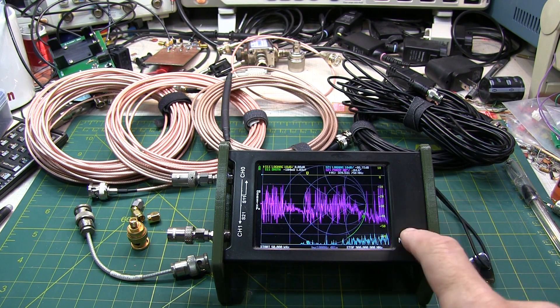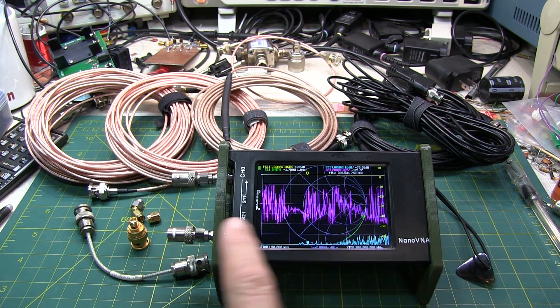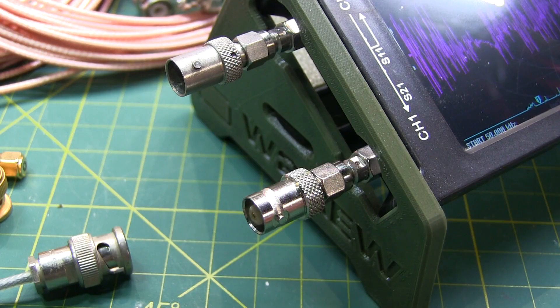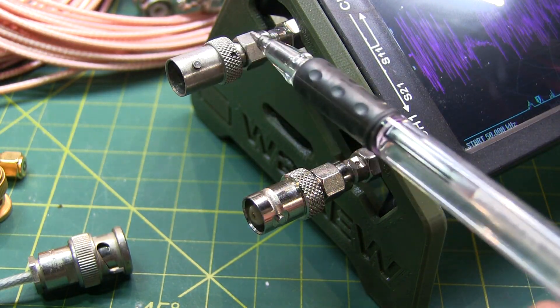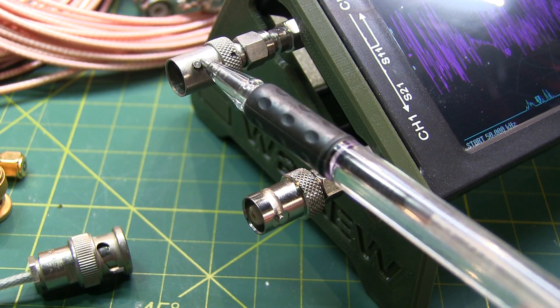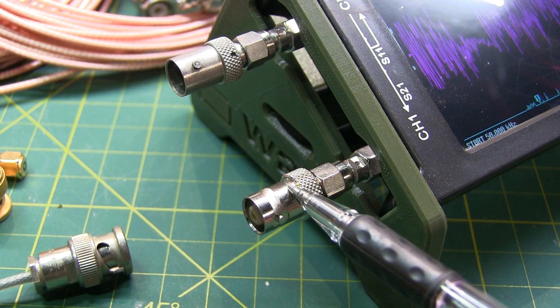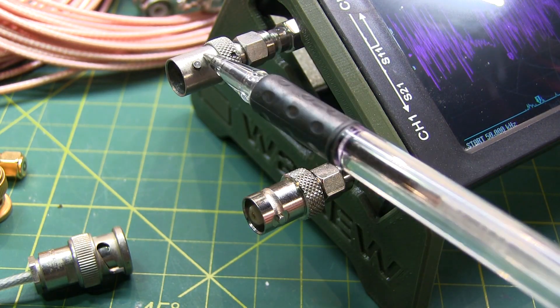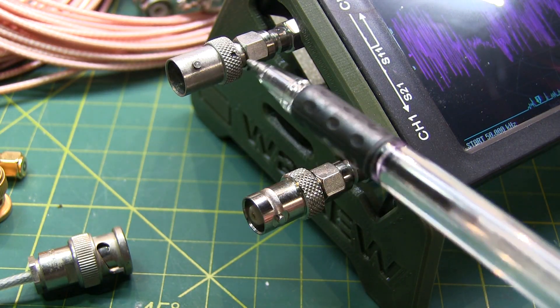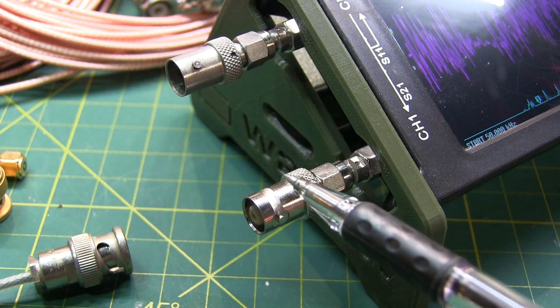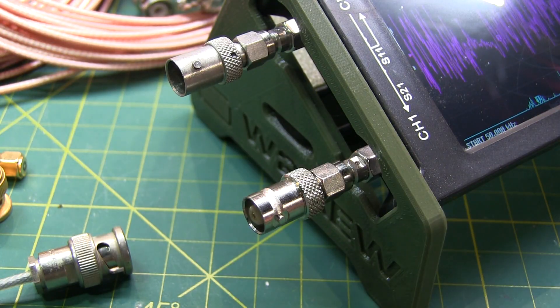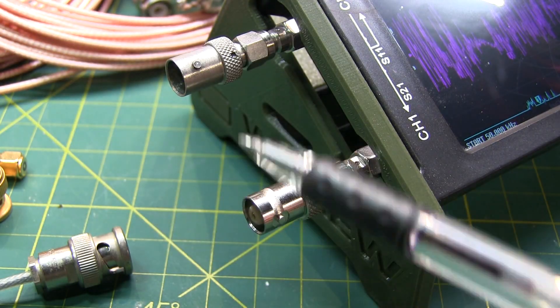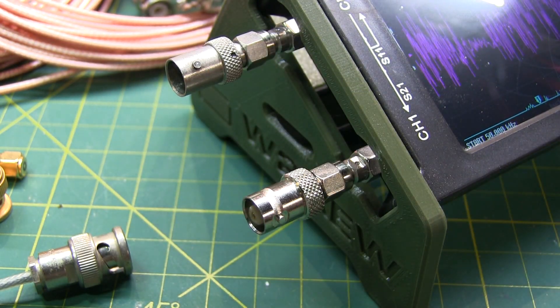We're going to make the measurements with the NanoVNA. So I'll show you how to set it up, how to properly calibrate it, and then go ahead and make the measurements. Now on the VNA itself, I've attached a pair of SMA to BNC adapters, because all of these coax assemblies have got BNC connectors. And I want these adapters to be included in the calibration, so their effect is going to essentially be zeroed out or taken out as part of the calibration process.